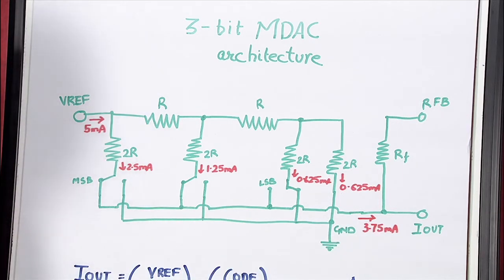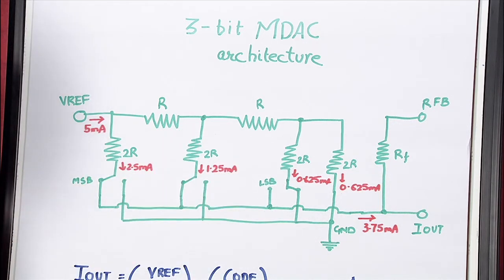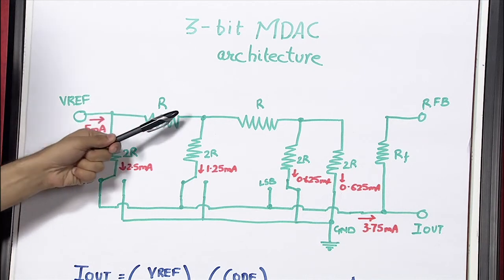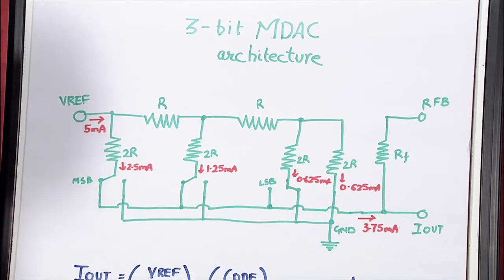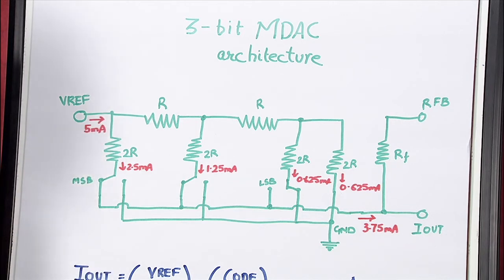To calculate the current flowing into IOUT, we have to calculate the current flowing into each of these legs. It's quite easy because at any point along this R resistance, the equivalent series resistance looking outside is 2R.